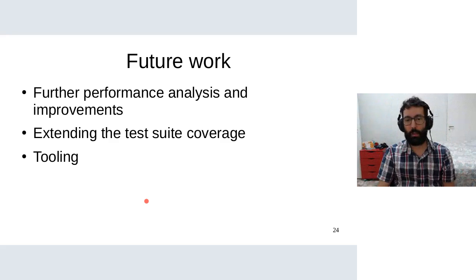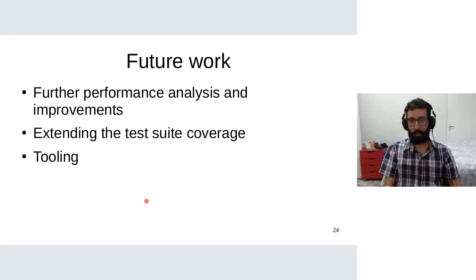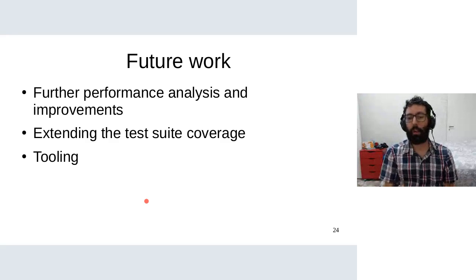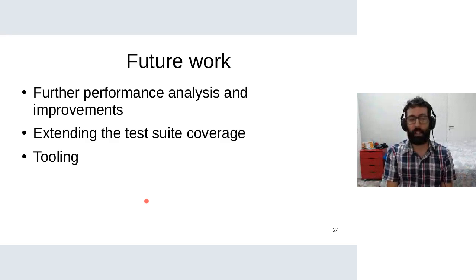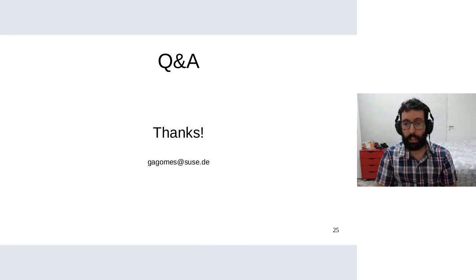As future work, we want to continue with further performance analysis and improvements — we've done some benchmarking but need to do more to detect additional sources of overhead. We also plan to extend the test suite coverage, adding more tests closer to real-world scenarios. Additionally, we want to develop better tooling: currently we have the ULP trigger tool and tools that list all processes in a system that can be live-patched, but the tools are still a bit rough around the edges and need some love. Thank you for joining the session — open for more questions.